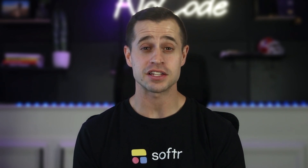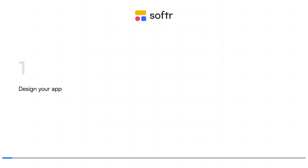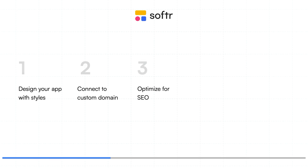Hi, I'm JJ, and welcome to the final lesson of this series. By the end of this lesson, you'll know how to design your app using global and block styles, connect your application to your company's custom domain, optimize your application for search engine visibility, test your application on various device settings to ensure it works well on desktop, tablet, and mobile devices, and finally how to publish your app to the world.